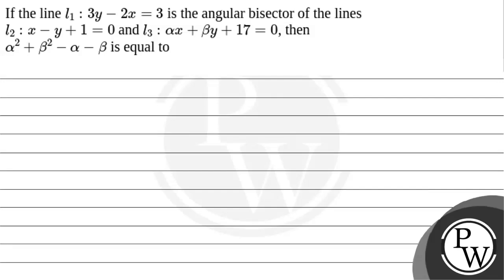Hello Macho, let us read this question. The question says, if the line L1: 3y minus 2x equals 3 is the angular bisector of the lines L2: x minus y plus 1 equals 0 and L3: alpha x plus beta y plus 17 equals 0, then alpha square plus beta square minus alpha minus beta is equal to.